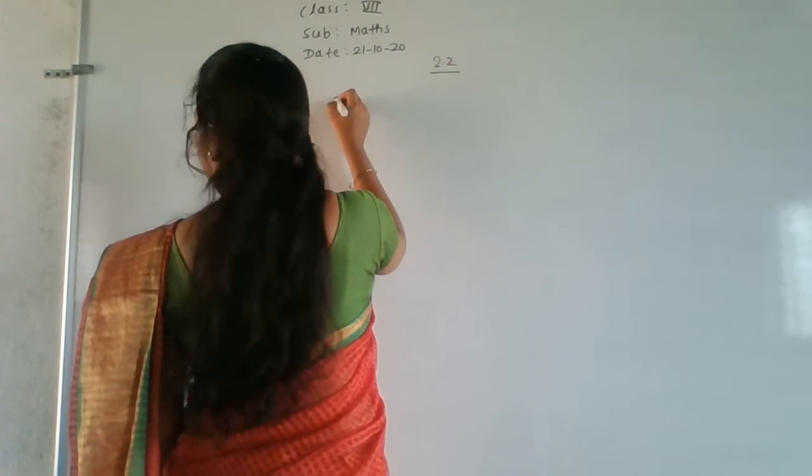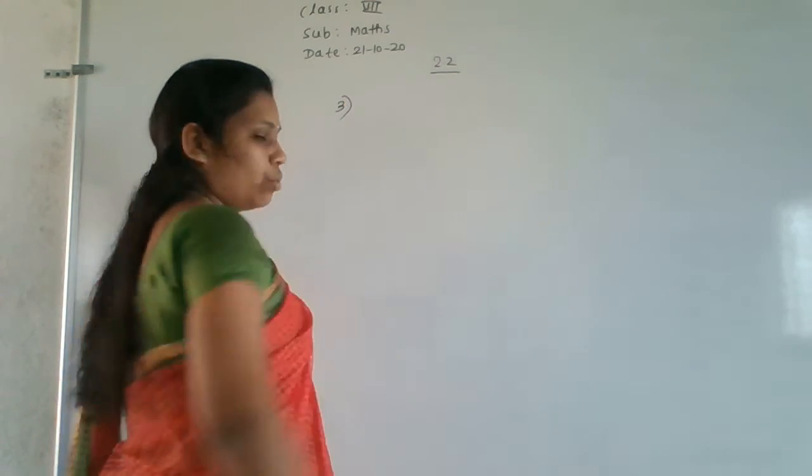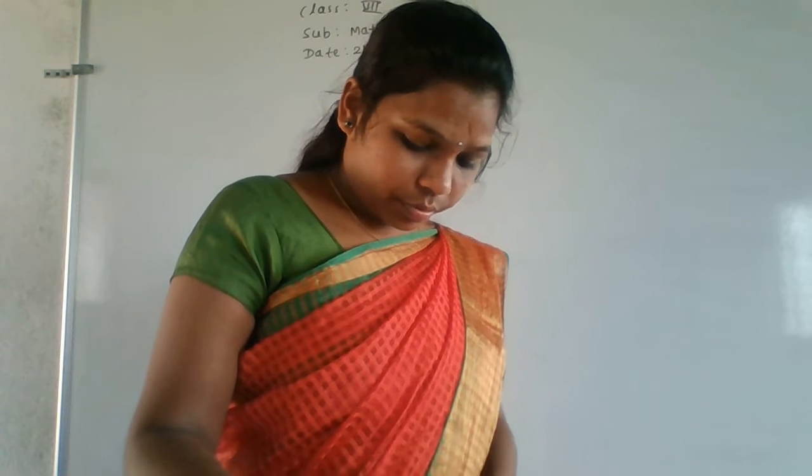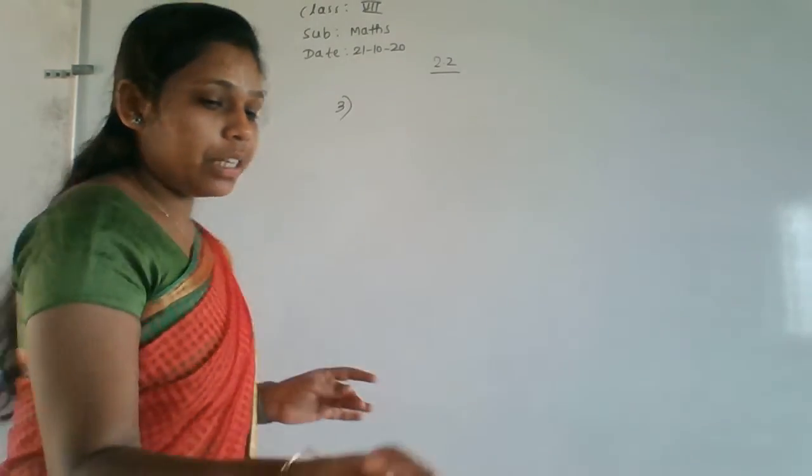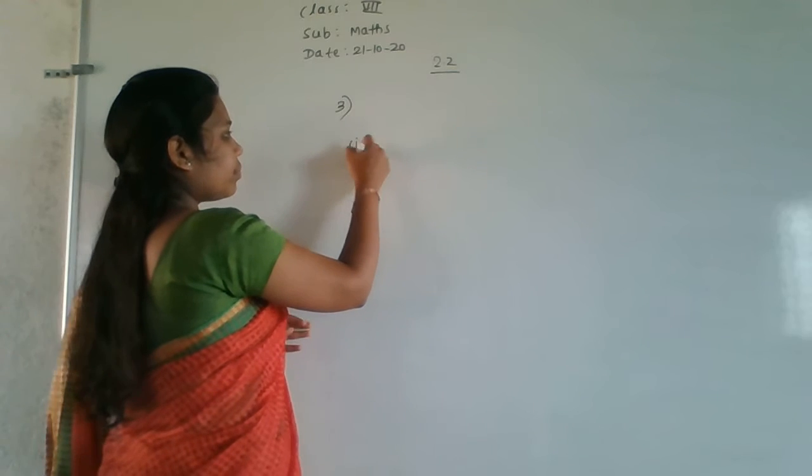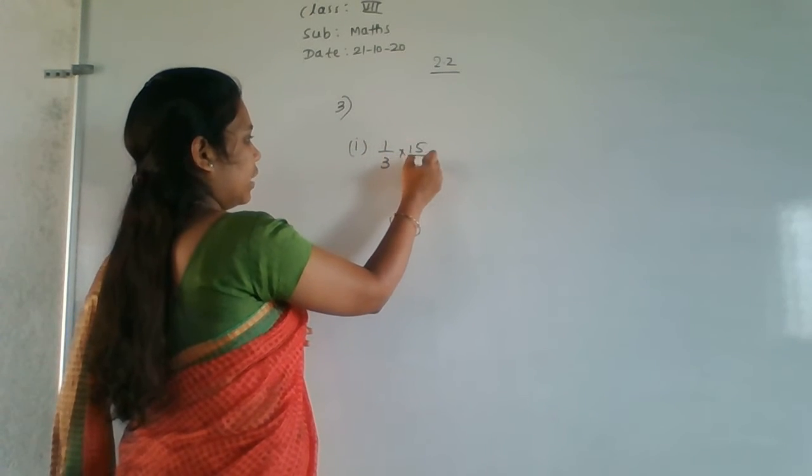Now moving to the 3rd main of exercise 2.2. The instruction is: multiply and reduce to the lowest possible terms. Lowest possible terms means the same as simplest form of that fraction. First question: 1/3 × 15/8.